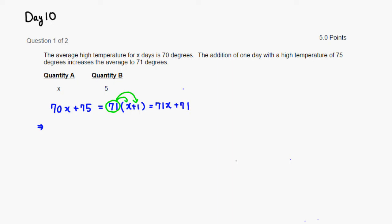The first thing I would do is subtract 70X from both sides. That way this 70X is gone. So you have 75 equals 71X minus 70X, which will be X, then you still have 71.